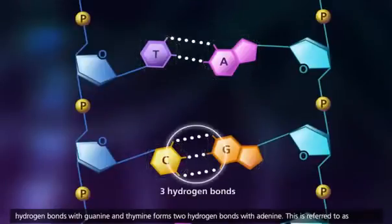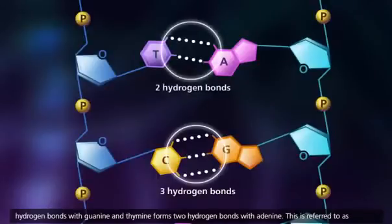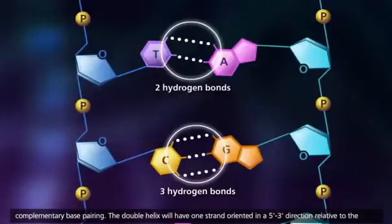Cytosine forms three hydrogen bonds with guanine, and thymine forms two hydrogen bonds with adenine. This is referred to as complementary base pairing.